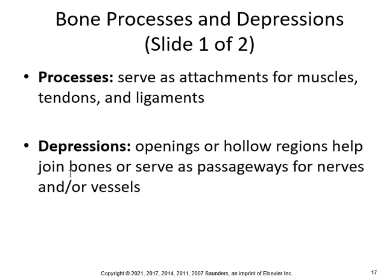Bone processes and depressions are ways we label features so we know where ligaments and muscles attach. Processes serve as attachment points, while depressions are openings or hollow regions that help join bones together or serve as passageways.